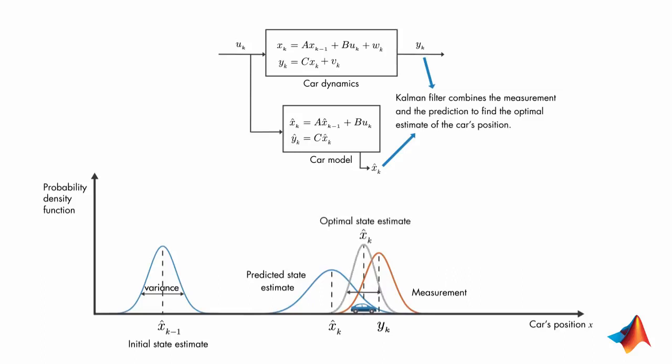This optimal estimate is found by multiplying the prediction and measurement probability functions together, scaling the result, and computing the mean of the resulting probability density function.